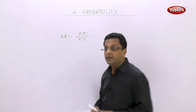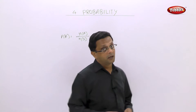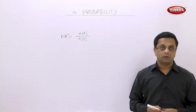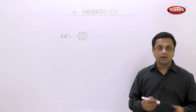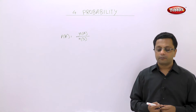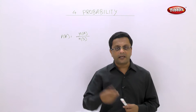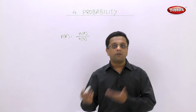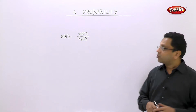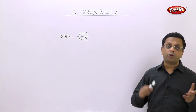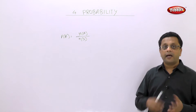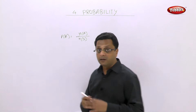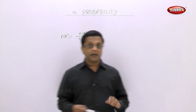This number will always be less than or equal to 1, because probability 1 is 100%. That means if a coin is tossed, the sample space is H and T. If event A is either heads or tails, then my probability is 100%, that is 1, because either head will come or tail will come. So that probability always lies between 0 to 1.